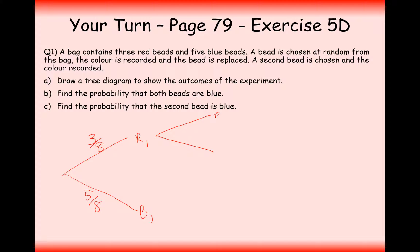Now in this experiment here, we are replacing the bead back into the bag. So the second time round, it's still going to be three out of eight. And for the blue bead, it's still going to be five out of eight. And this probability would be exactly the same as well because we have replaced the bead into the bag. So we get three out of eight and five out of eight.